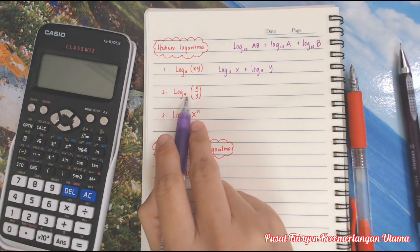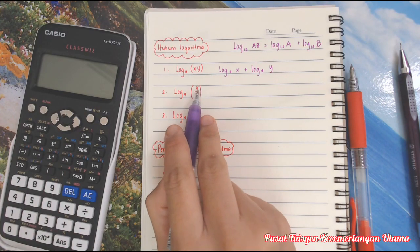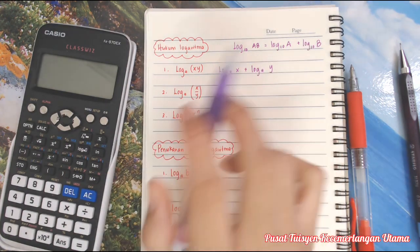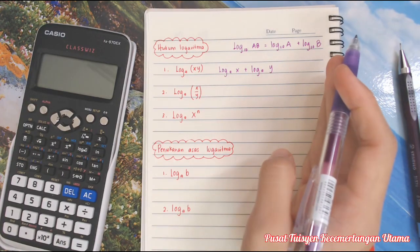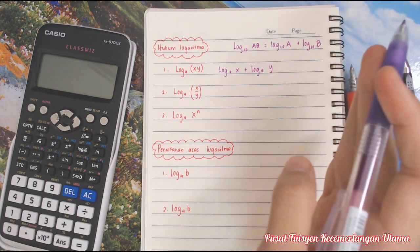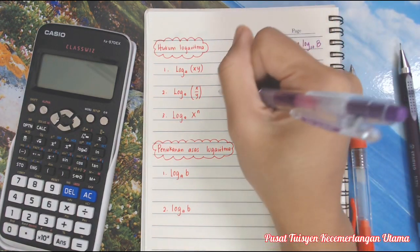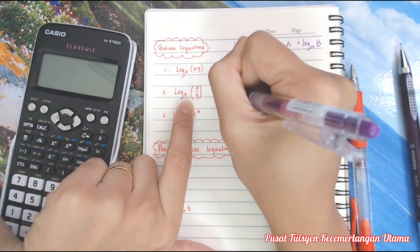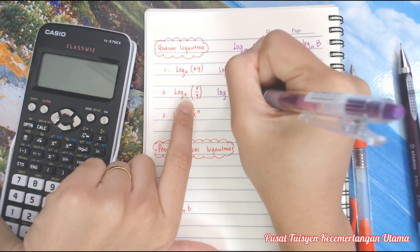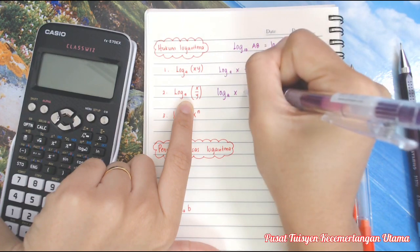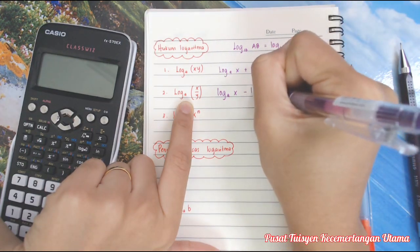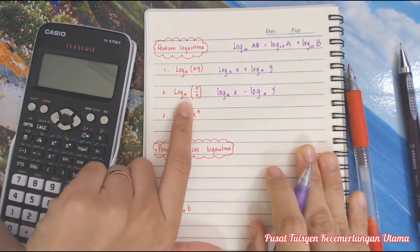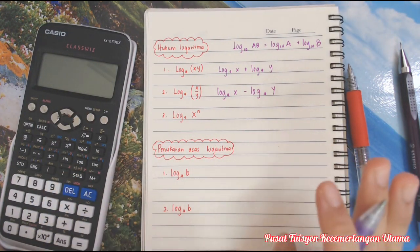Log a x over y. Pecahan ni maksudnya bahagi kan. Bahagi dalam index, kita kena tolak. Jadi awak kena tolak lah. Dia punya log ni still sama. Log a x tolak log a y. Ingat, kena hafal.